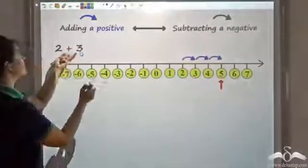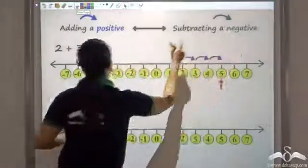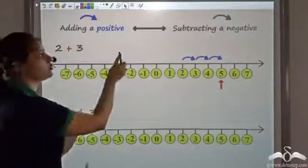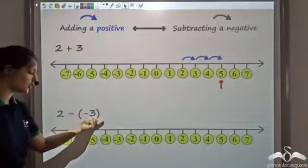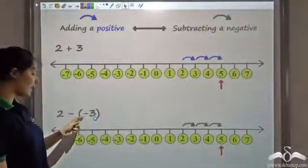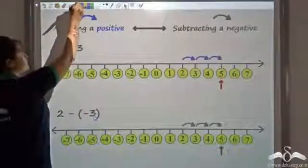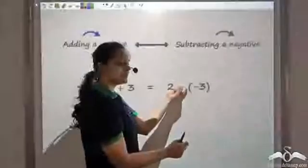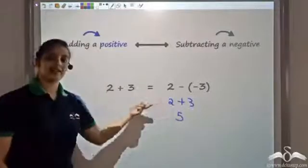Now let me check subtracting a negative, keeping the numbers the same: 2 and 3. But I am subtracting, so I change the sign — I am subtracting negative 3. When I subtract a negative number, I move in the forward direction. So I start from 2 and move 3 forward. Again I get 5. So 2 minus negative 3 gives me 5. Both sides give 5 — adding a positive and subtracting a negative are the same thing. That is, 2 + 3 is the same as 2 − (−3) = 5.